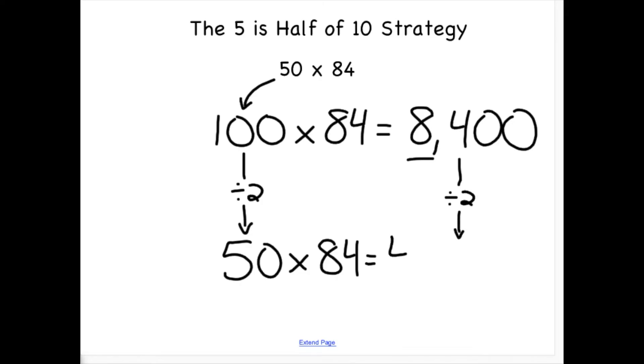Half of 8,000 is 4,000 and half of 400 is 200. If I add those partial halves together, I get the answer to my original problem, 4,200.